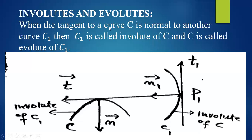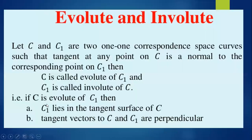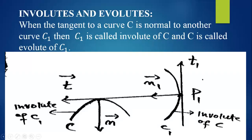To explain again: when the tangent to curve C is normal to another curve C1, then C1 is called the involute of C, and C is called the evolute of C1. Note: there was a small error in the previous writing — it should read 'evolute', not 'involute' for C.